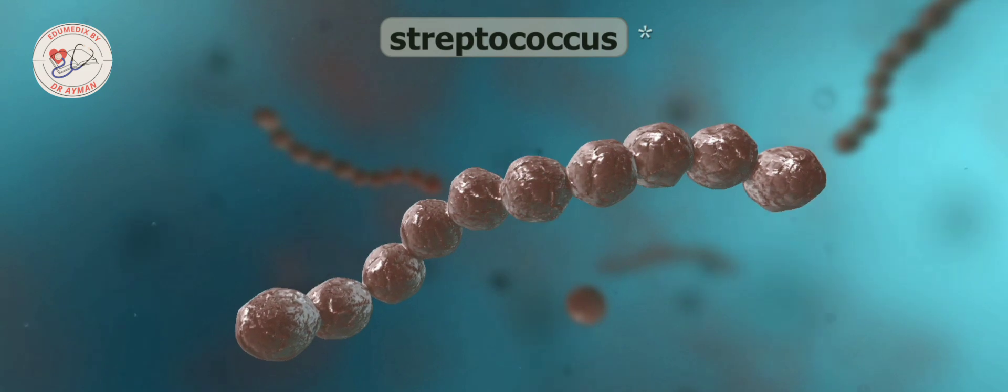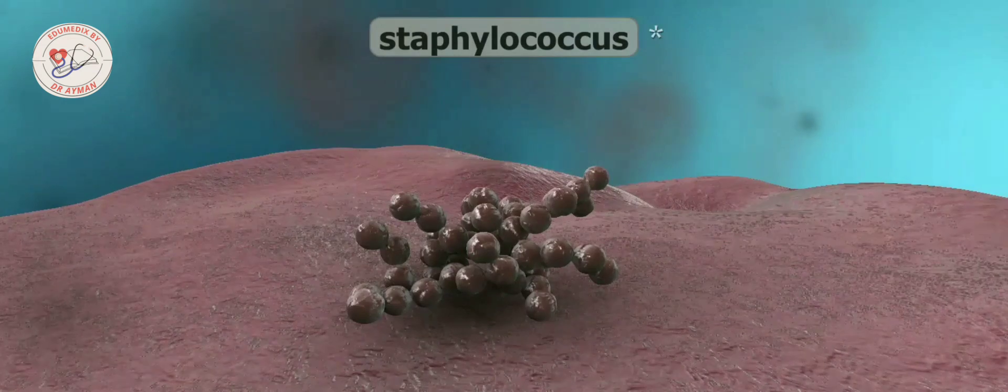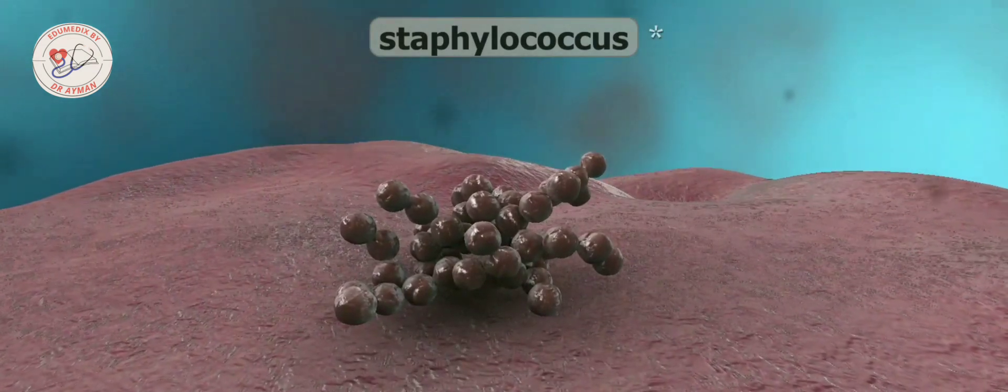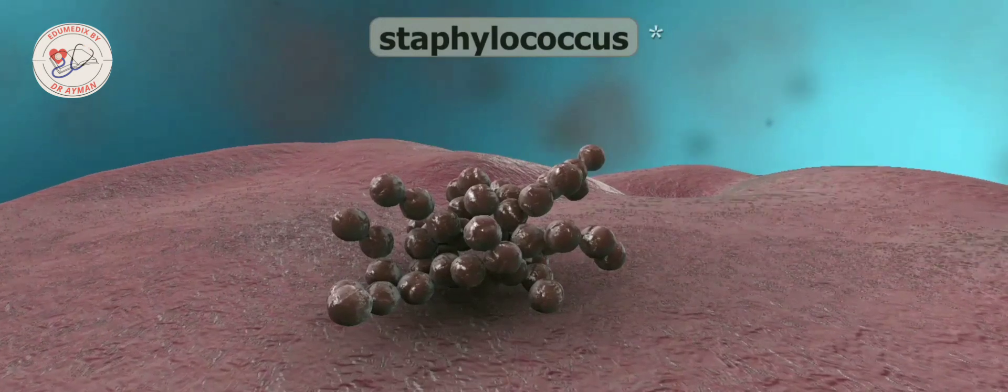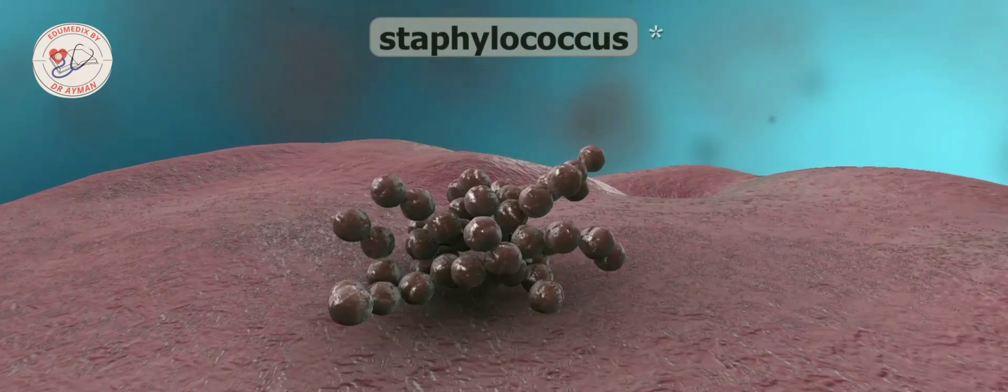Spherical bacteria, which are called cocci, can occur as single cells, pairs, chains, or clusters. Any bacteria that produce septic infections or pneumonia are spherical. Gonorrhea is also caused by cocci.